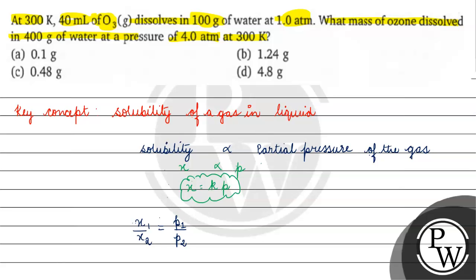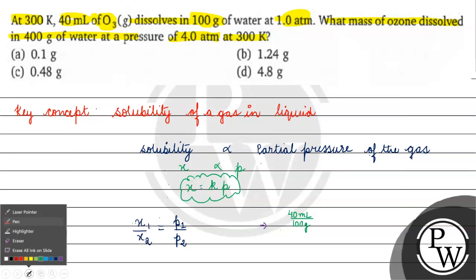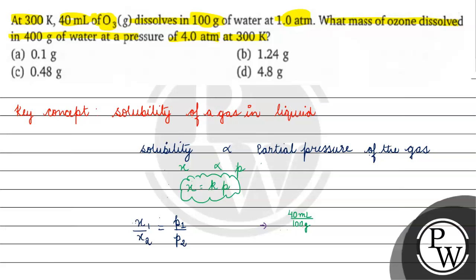Now, as mentioned in this question, the solubility of ozone was 40 ml in 100 gram of water. So we write it as 40 ml per 100 gram — this is the solubility of ozone in 100 gram of water at 1 atm. We need to find the solubility of ozone at 4 atm pressure.